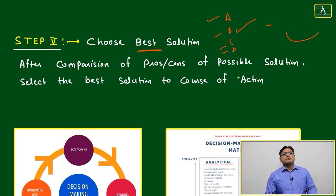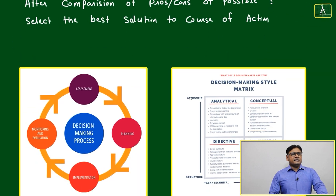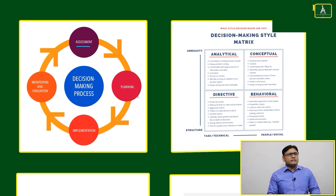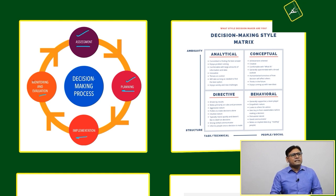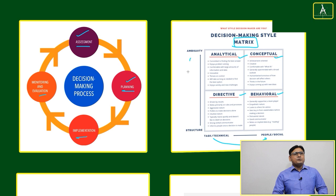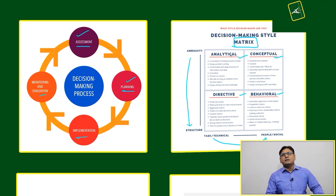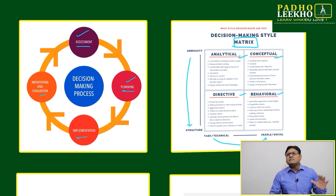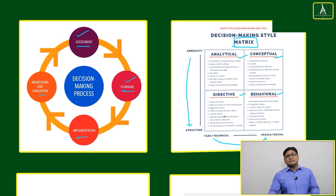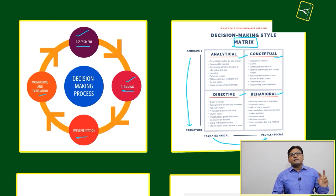After comparison of pros and cons of possible solutions, select the best solution as a course of action. Decision making can be understood as a cyclic process — sometimes called the VCS cycle — moving through planning, implementation, monitoring, and evaluation, then back to planning again. It can also be understood through a decision matrix: analytical, conceptual, direct/technical, and people/social dimensions, moving from ambiguity to structure.